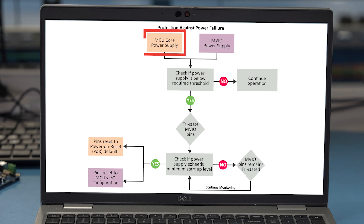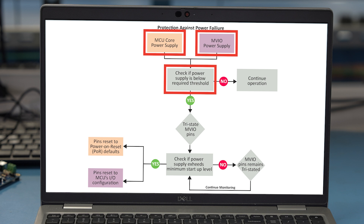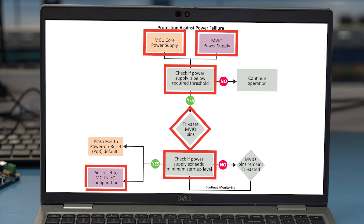Yeah, for sure. Unlike discrete level shifters which don't provide any intelligent feedback, our MVIO has a built-in mechanism that can protect against power supply failures. For example, if the microcontroller's core or the MVIO's power supply drops below the minimum threshold where they can no longer reliably operate, the MVIO will tri-state its pins until the power supplies exceed the minimum startup level. At that point, the pins will either be reset to the MCU's IO configuration or power-on reset defaults, depending on whether it was the microcontroller's core or the MVIO's power supply that dropped below that minimum threshold.